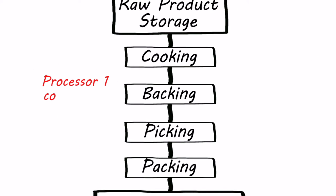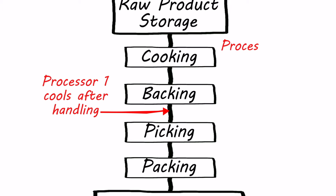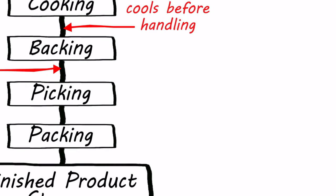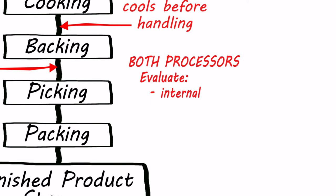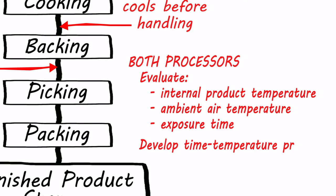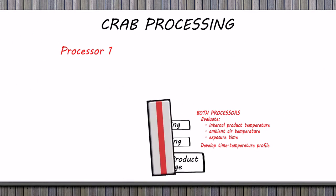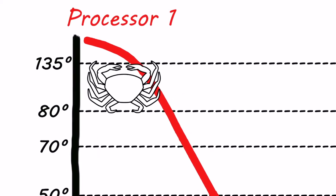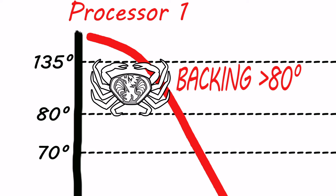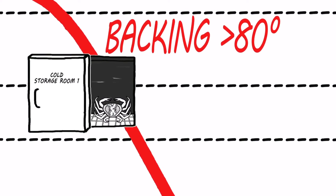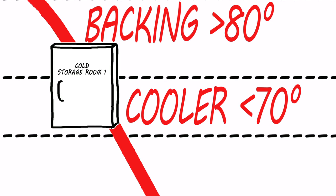In the first example, one processor handles the cooked meat before it's cooled, while the other handles the cooked meat after cooling the product to below 50 degrees Fahrenheit. Both processors do an assessment to evaluate internal product temperature, ambient air temperature, and exposure time, and use the data to develop a time-temperature profile. In this first graph, the processor removes the back shell of the crab, called backing, while the product temperature is above 80 degrees Fahrenheit. After backing, the crab is placed in the cooler, and the internal temperature shows the product is below 70 degrees within the first hour after initial handling.